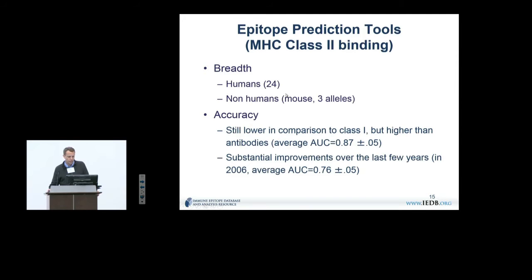In contrast, MHC class II binding has lower breadth — we have 24 human alleles and three alleles for mice, but not much for non-human primates. Accuracy is lower than class I but higher than what's available for antibodies, and the biggest recent improvements have been made here. Both for class I and class II we have pan-MHC methods available which extrapolate from characterized alleles to others, meaning we are effectively covering not just 24 human class II alleles and 83 class I alleles but to some extent the entirety of MHC alleles.